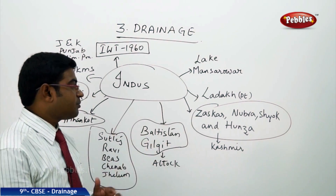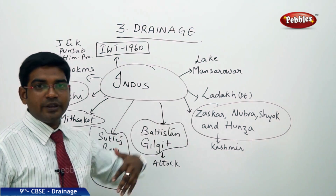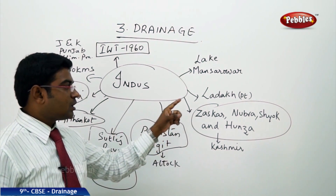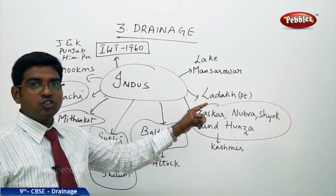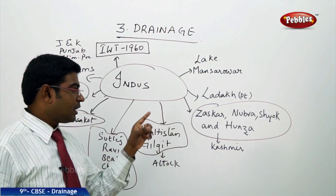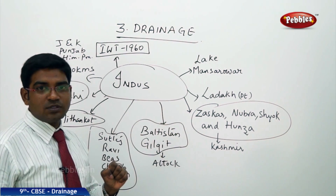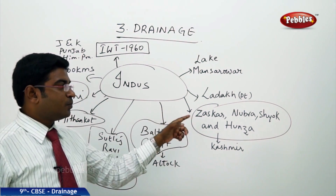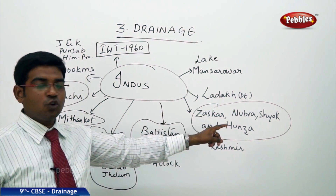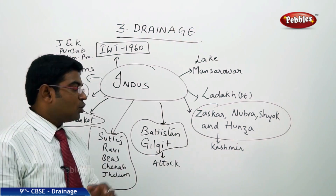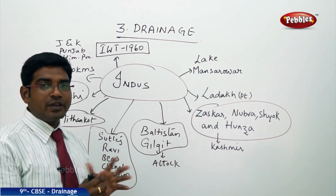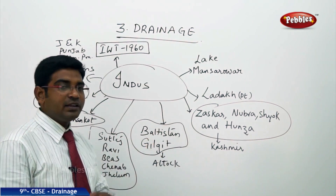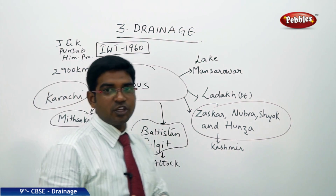The tributaries coming from Tibet to India are Zanskar, Nubra, Shyok, and Hunza. These four together join River Indus in the Kashmir region.